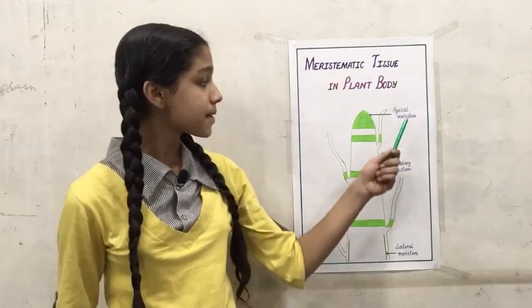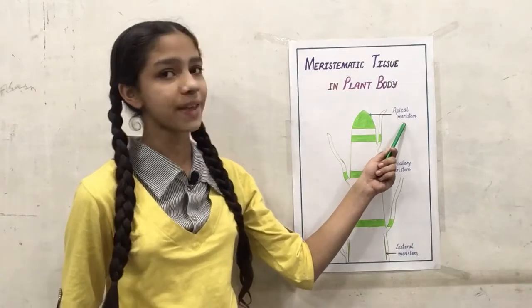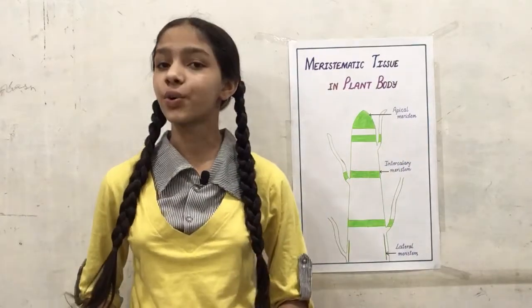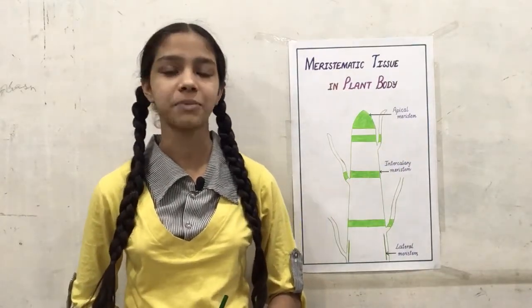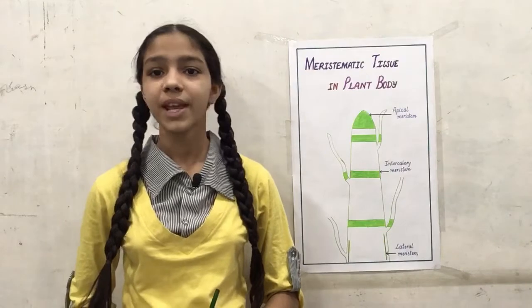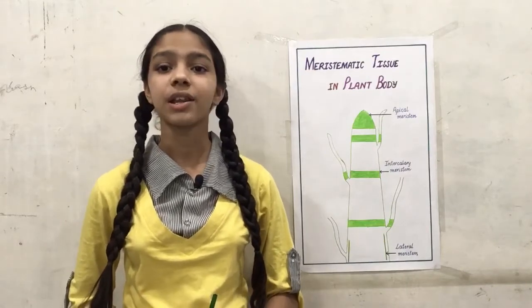Apical meristem is present at the growing tips of the shoots and roots of the plant body. It helps in increasing the length of the plant.